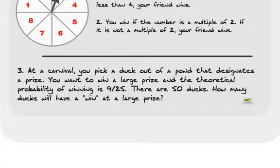You ever been to a carnival and you're picking out the ducks out of a pond, designates a prize? Well, you go to this carnival and the theoretical probability of winning is nine out of 25. Well, there are 50 ducks total. How many ducks will have a win at a large prize? 50 ducks total. Nine out of 25 probability. What'd you get?